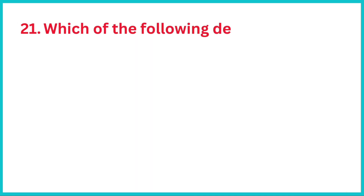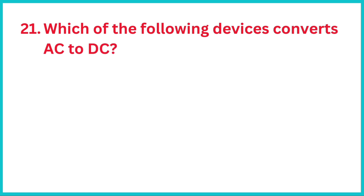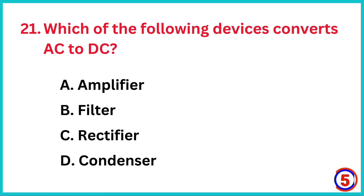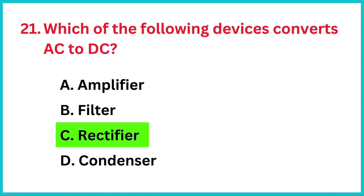Which of the following devices converts AC to DC? The correct answer is option C: Rectifiers.